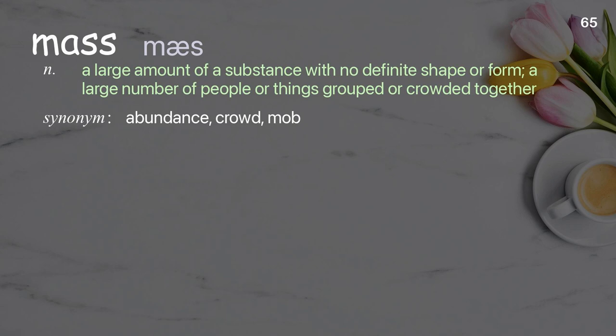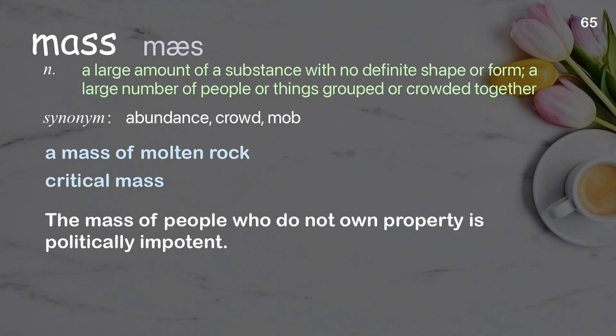Mass: a large amount of a substance with no definite shape or form; a large number of people or things grouped or crowded together. Examples: a mass of molten rock, critical mass. The mass of people who do not own property is politically impotent.